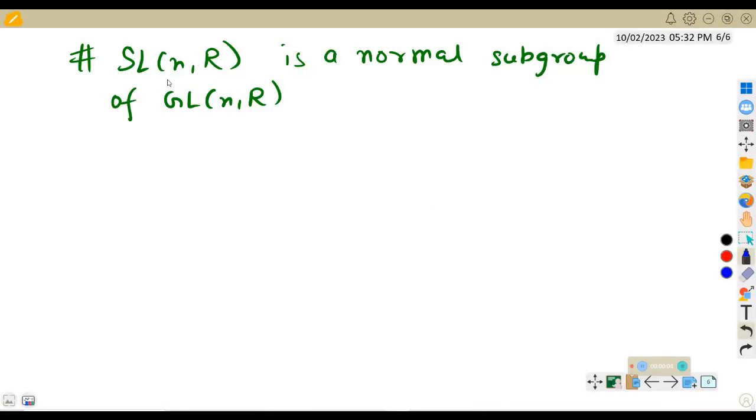We are going to show here that SL(n,R) is a normal subgroup of GL(n,R). First of all, what is GL(n,R)? These are all n cross n matrices over R such that determinant of A is not equal to 0.